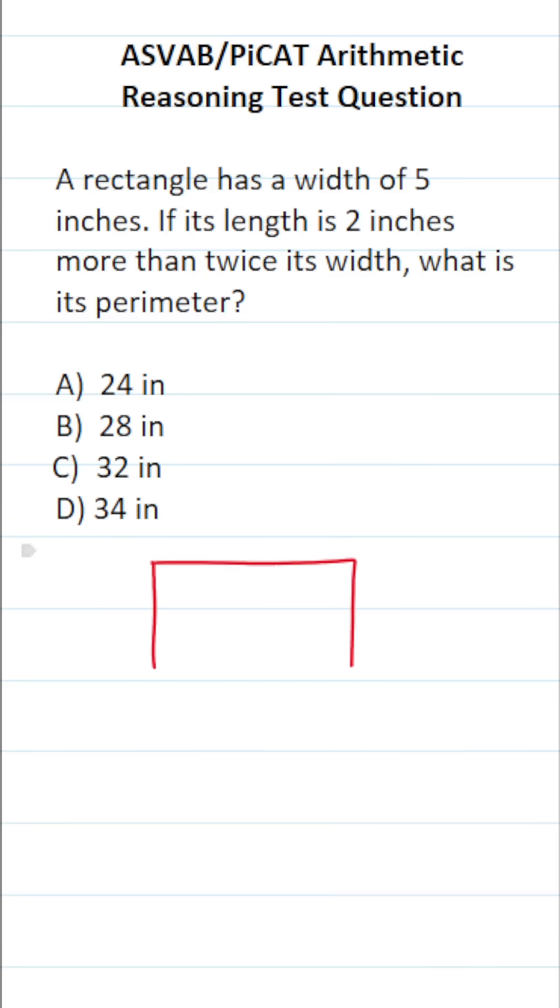If it's helpful, you can always make a quick sketch, and I think it's very helpful in this case. According to the problem, we know the width of this rectangle is 5 inches. So that is 5, and that is 5.